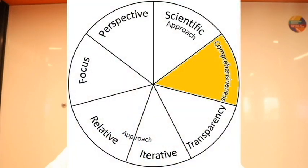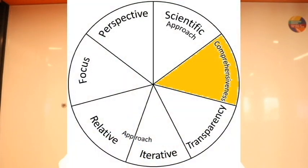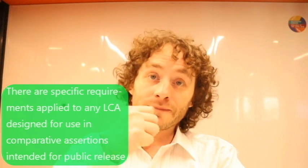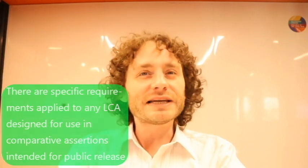Hand-in-hand with transparency is comprehensiveness. A well-crafted LCA tries to consider all aspects of the product systems with respect to the environment, natural resources, and human health. The goal is to identify and assess potential trade-offs associated with the product, making sure they aren't buried anywhere in the study or allocated between phases in a way that leaves them unaccounted for — because that's what it's all about: accountability.